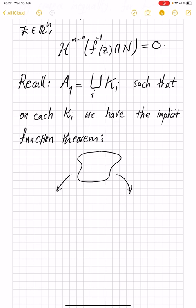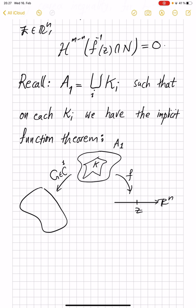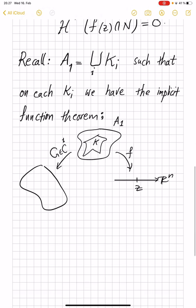So this A1 is the set where rank is full. If your function was C^1, you would get the implicit function theorem on an open set, but now you get it only on a measurable set. And this is the original F mapping into R^n. Here is z. The fibers get corrected by a C^1 diffeomorphism. So G is C^1 with the C^1 inverse.